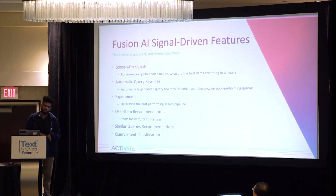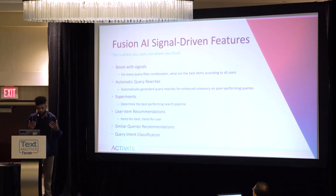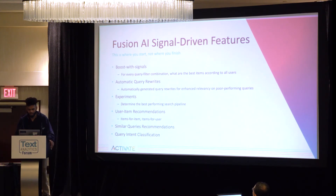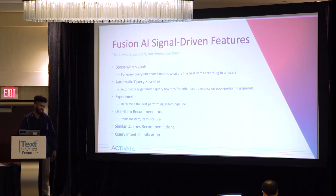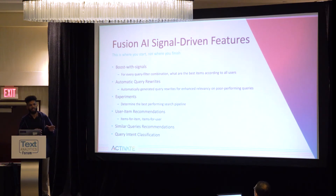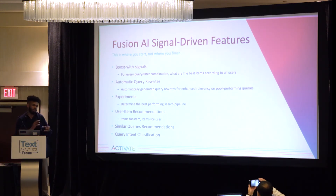Out of the box with Fusion AI, you get boosts with signals — for every filter combination, what are the best items to surface given all the signals collected. We use collaborative filtering to get to that point, and you can just use it out of the box. Automatic query rewrites: your synonyms.txt file is constantly being updated, along with a host of other optimizations to grab underperforming queries and rewrite them — so 'IPDA' becomes 'iPad.' We don't assume we know what's best; it's a data-driven approach, and we use experiments to test and determine what's best.